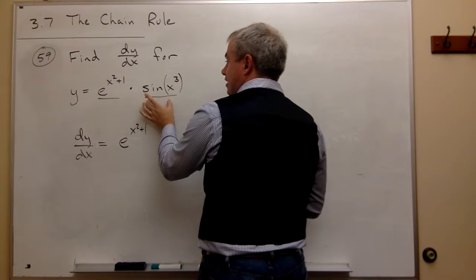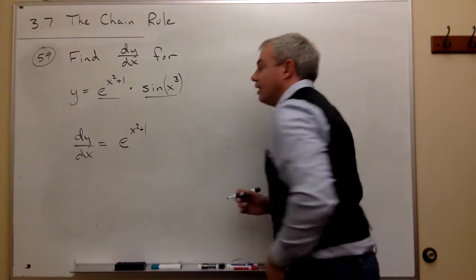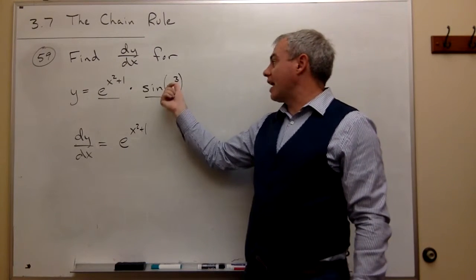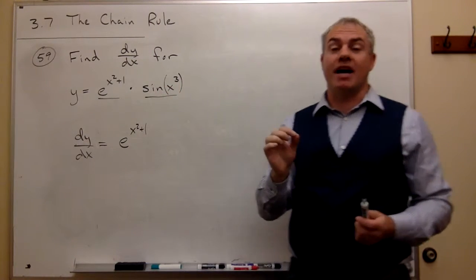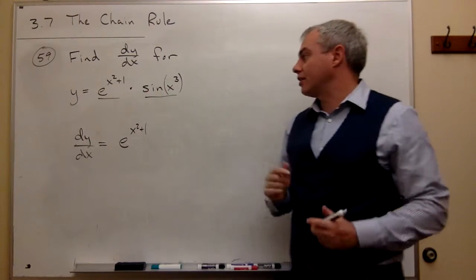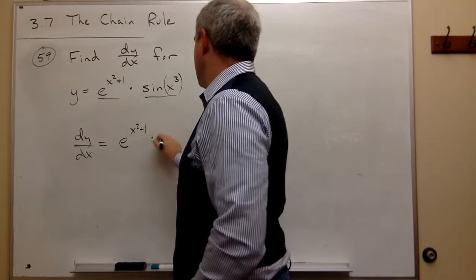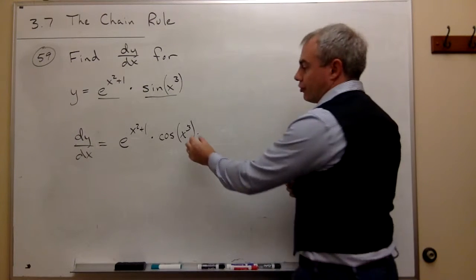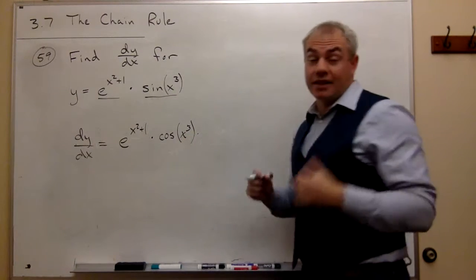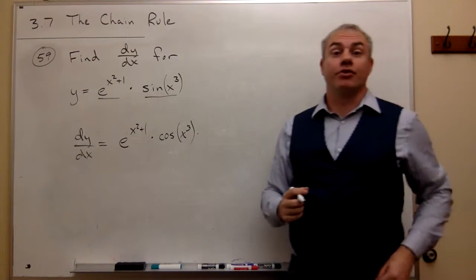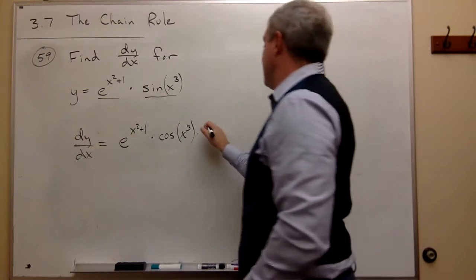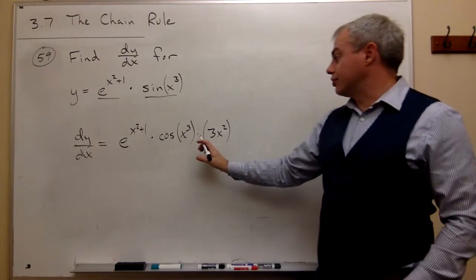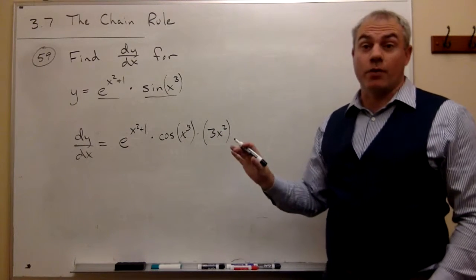If I want to take the derivative of sine of x cubed, I need to ask: what happens last? I cube the x, then I take the sine. So the sine happens last. I need to take the derivative of sine of something, and the derivative of sine of something is cosine of that thing. But I need to multiply that by the derivative of what was on the inside — in this case, x cubed. The derivative of x cubed is 3x squared, so I write down times 3x squared.